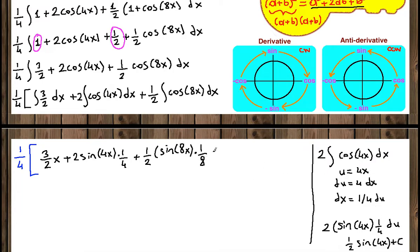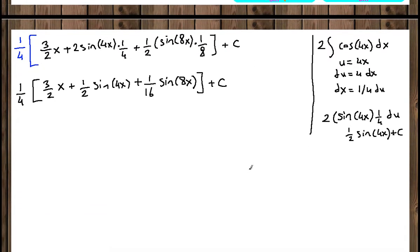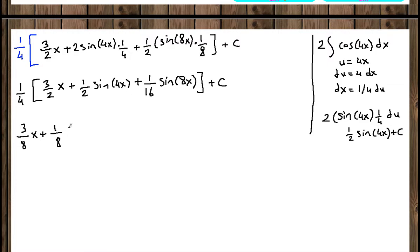So we get plus one half times one eighth, which is one sixteenth sine of 8x, plus C. Now we clean up with one fourth in front: three over 2 x, plus one fourth times one half is one eighth sine of 4x, plus one fourth times one sixteenth is one over 64 sine of 8x, plus C. Now distribute one fourth to each term: one fourth times three over 2 is three over 8 x.